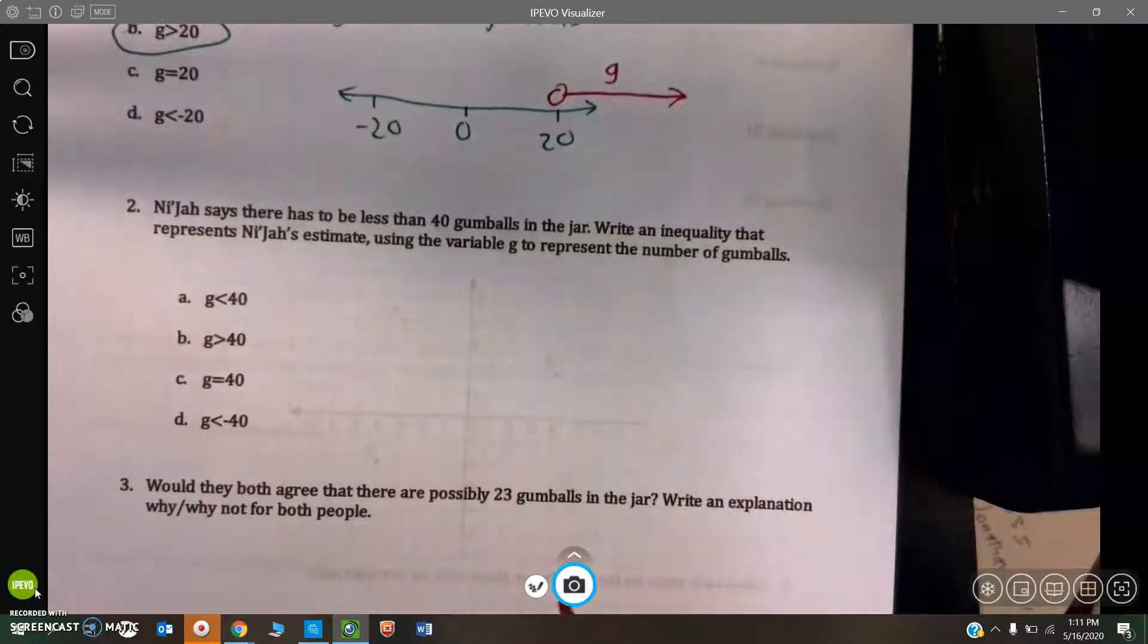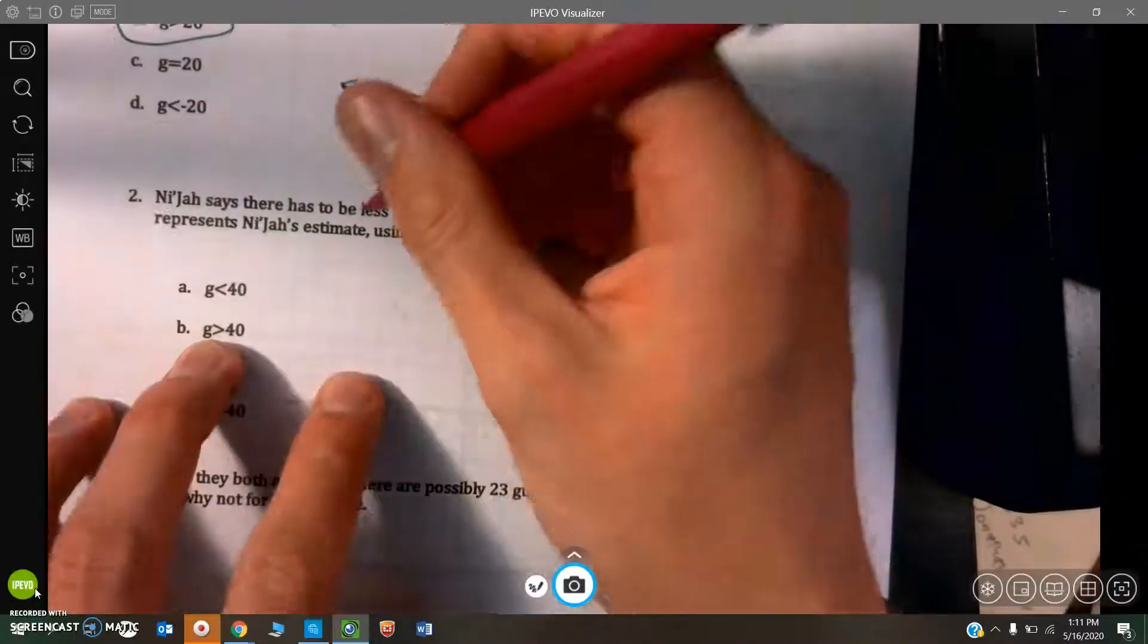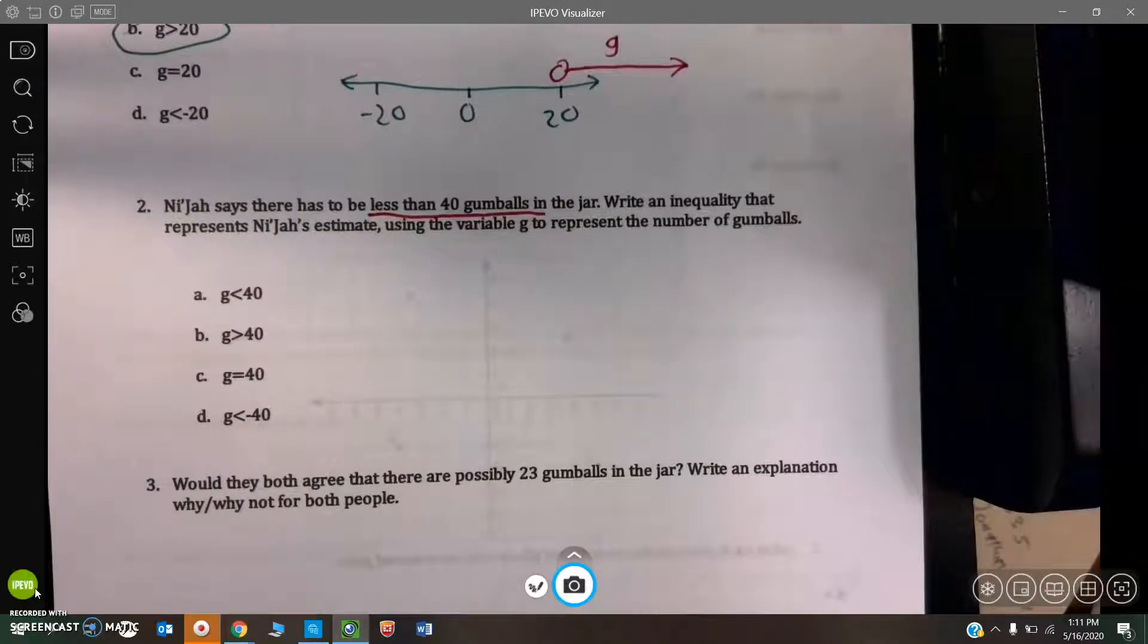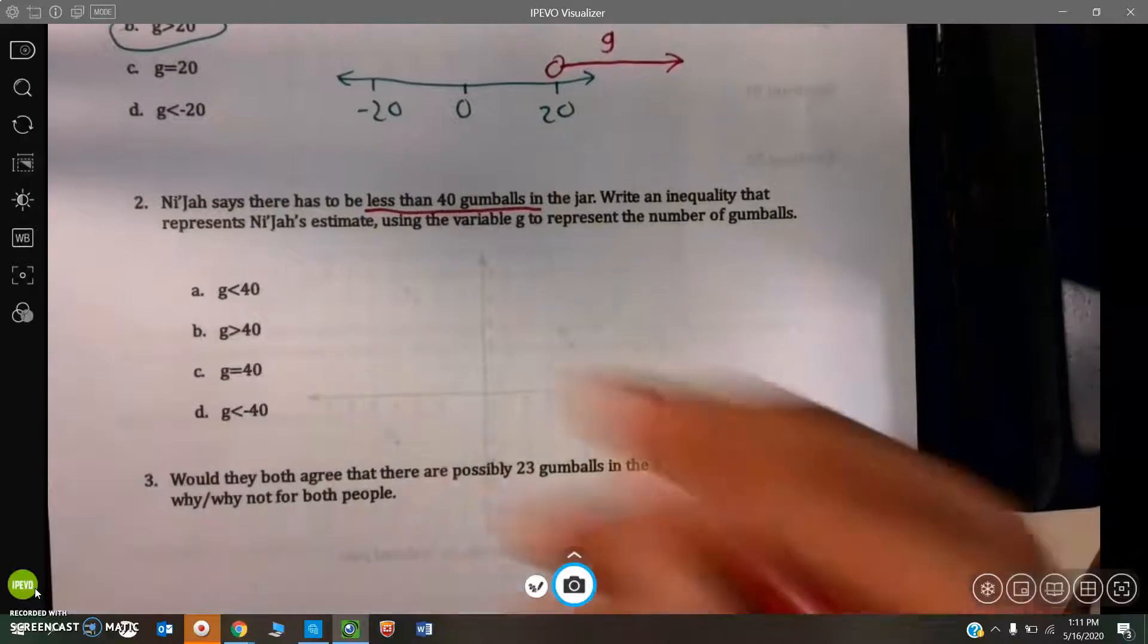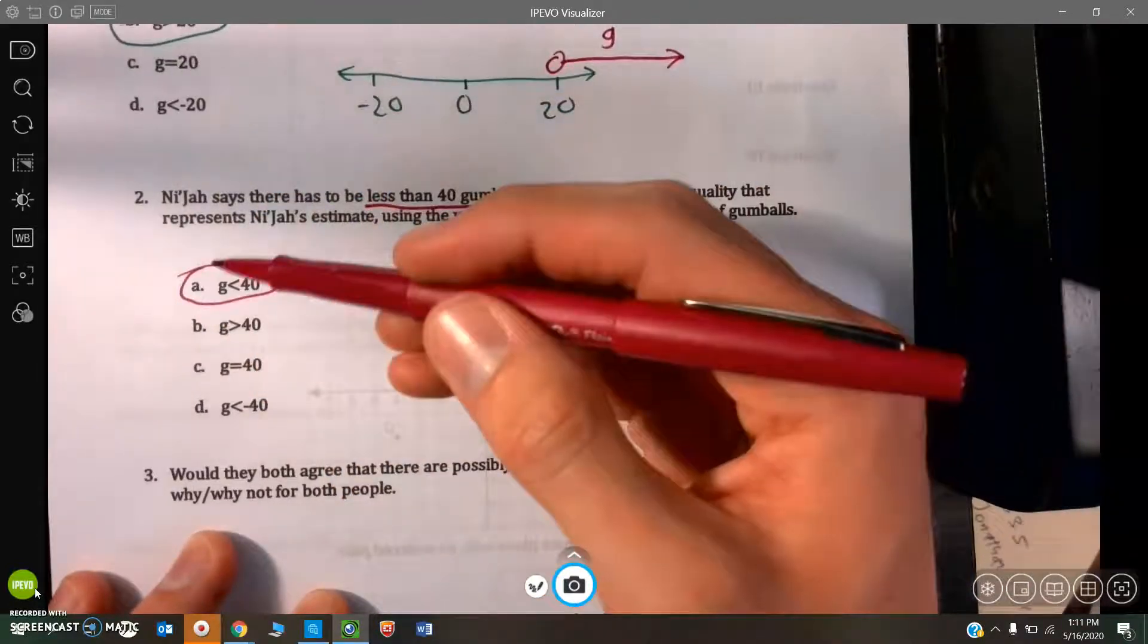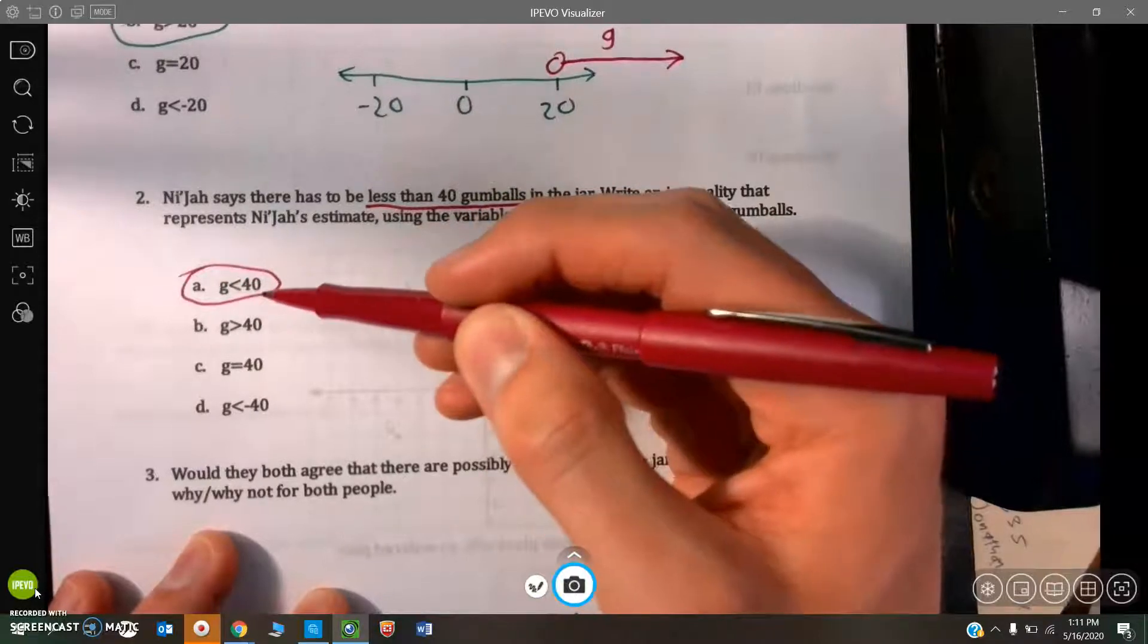Now, he just says there has to be less than 40 gumballs in the jar. Written inequality that represents her estimate. Take a look. A would be the right answer. Number of gumballs, G, is less than 40.